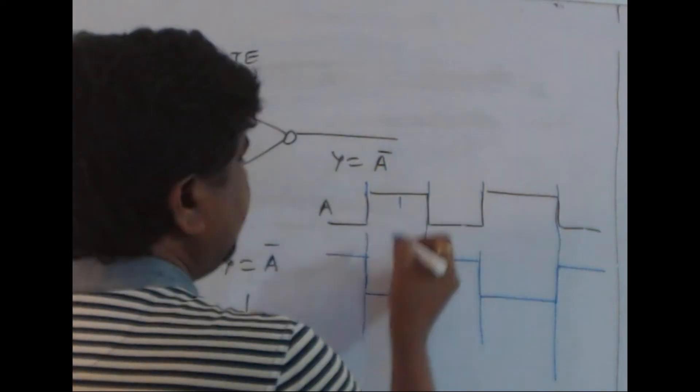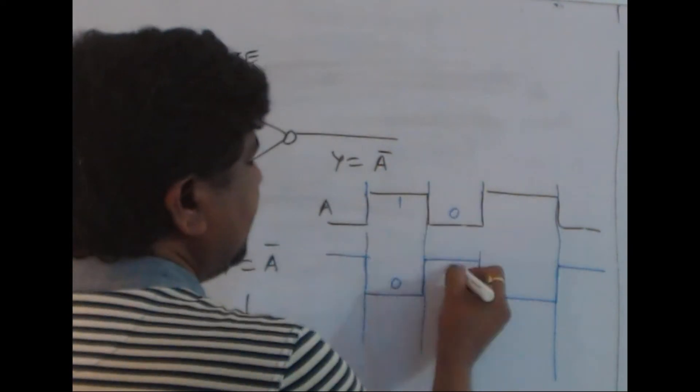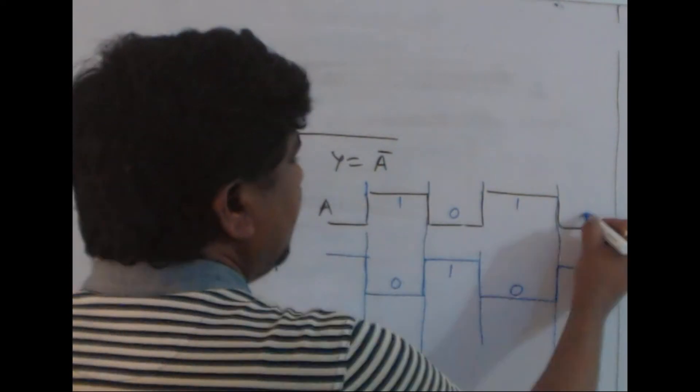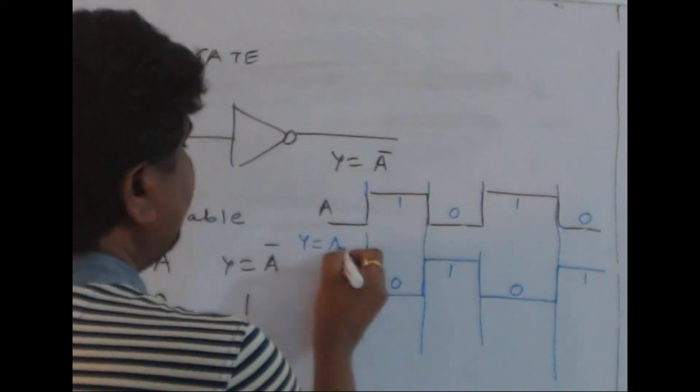This is 1, this is 0, this is 0, this is 1, this is 1, this is 0, this is 0, this is 1. So Y equals A bar.